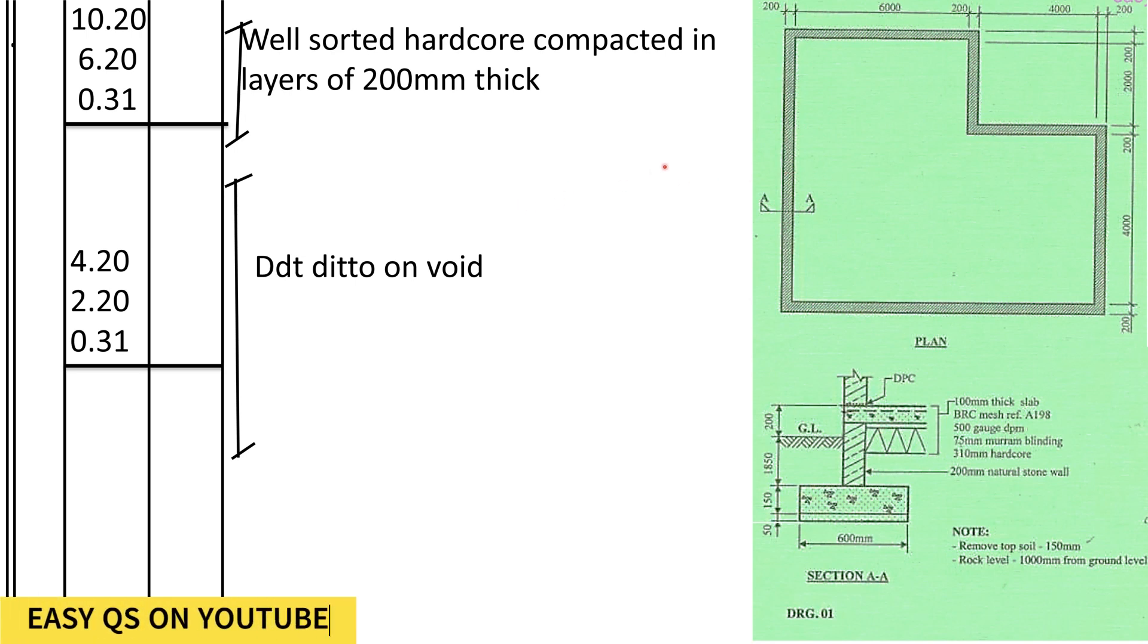Now we shall go to laying the hardcore. The hardcore is always laid inside the walls, so we shall take the total. Assuming this is a rectangle, we shall take the length inside the walls.